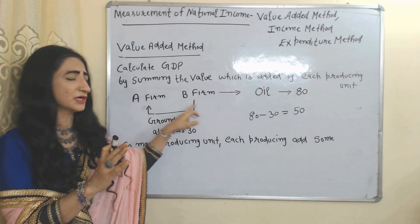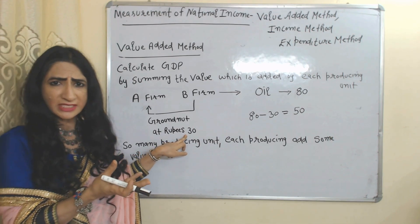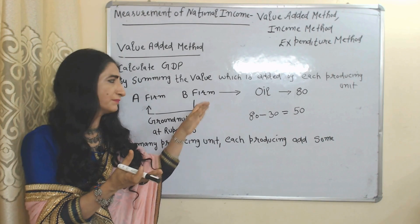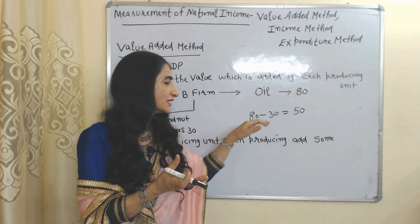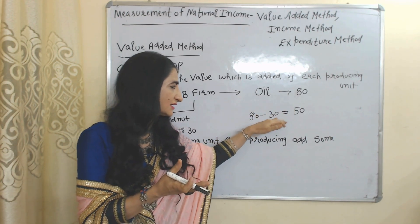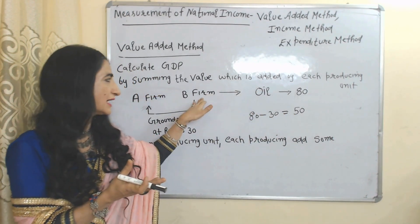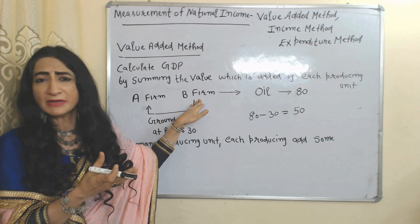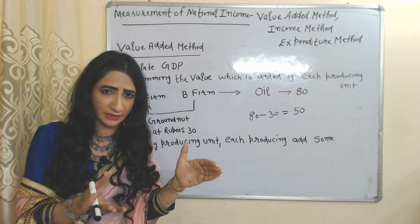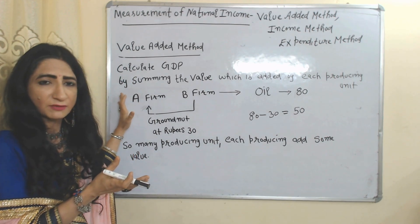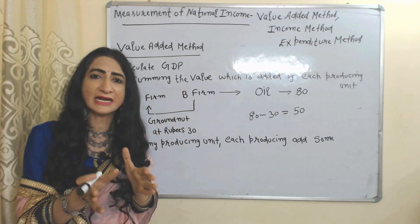Firm B purchased groundnut from Firm A at 30 rupees. By using these groundnuts, Firm B prepared oil and sold it in the market at 80 rupees. The difference between 80 and 30 is equal to 50 rupees. This 50 rupees is the value added by Firm B. Similarly, there are many producing units, and each producing unit adds some value to the product.